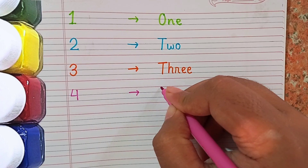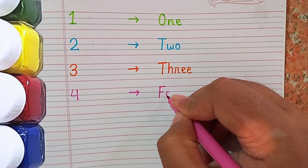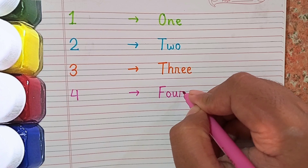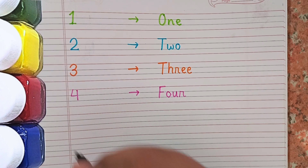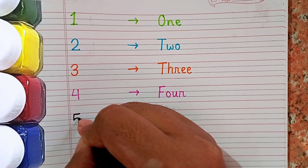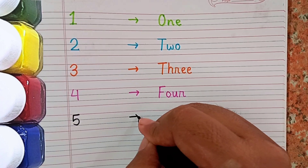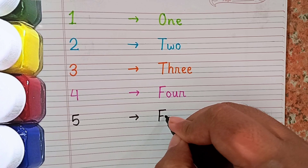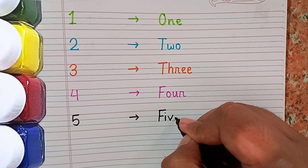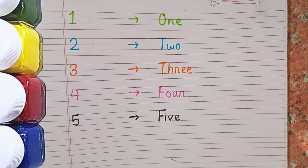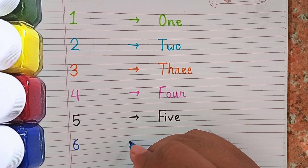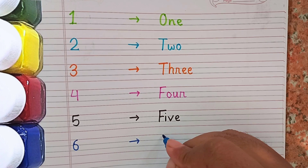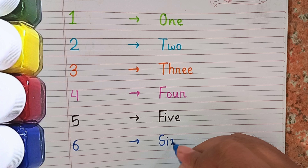The next number will be 4 and the spelling of 4 is F-O-U-R. After 4 the next number will be 5. This is 5 and the spelling of 5 is F-I-V-E. Remember the spelling kids: F-I-V-E.